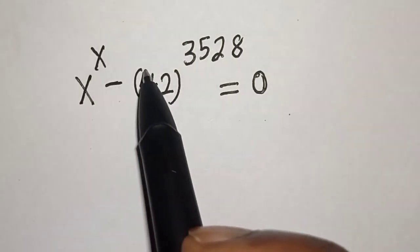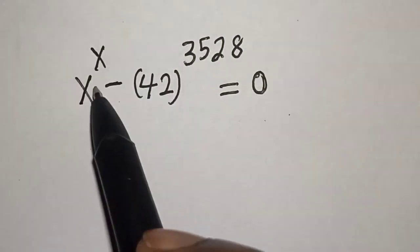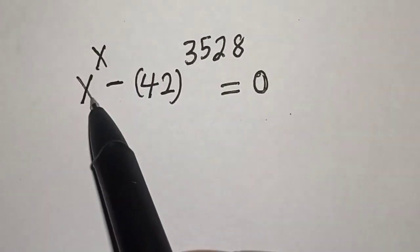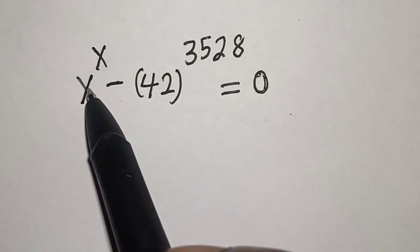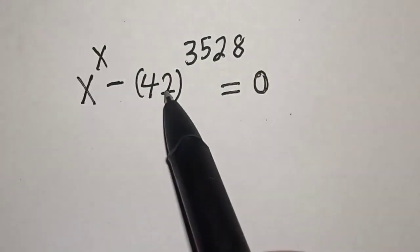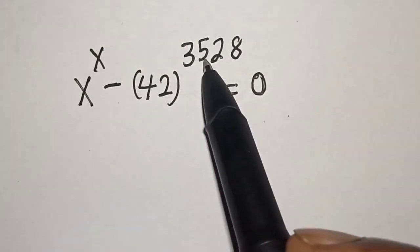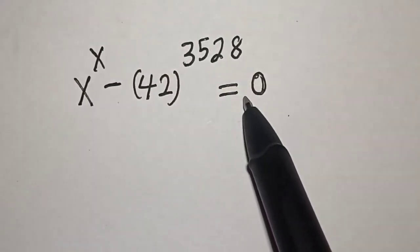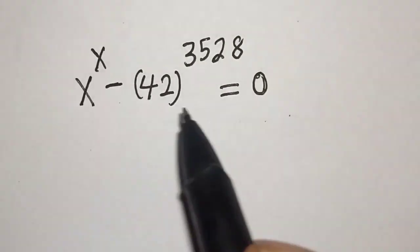Hello, welcome to Magist. In this class, we want to find the value of x from this equation: x raised to power x, minus 42 raised to power 3528, is equal to 0.